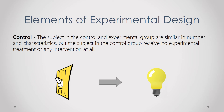Control: the subjects in the control and experimental groups are similar in number and characteristics, but subjects in the control group receive no experimental treatment or intervention at all. In the simple structure of an experimental design there are two groups: the control group and the experimental group. In the example, the experimental group tests the hypothesis by flipping the switch, while the control group has no intervention — the switch is not flipped — so you can compare the effects.